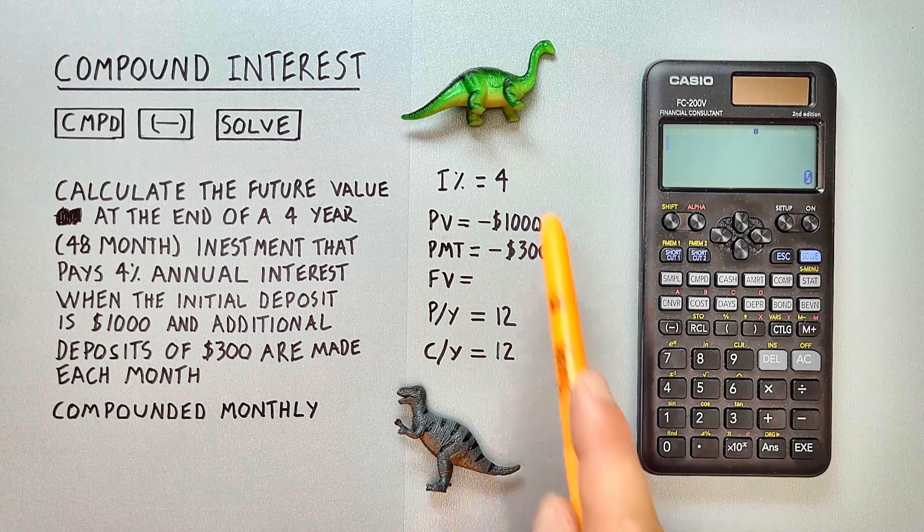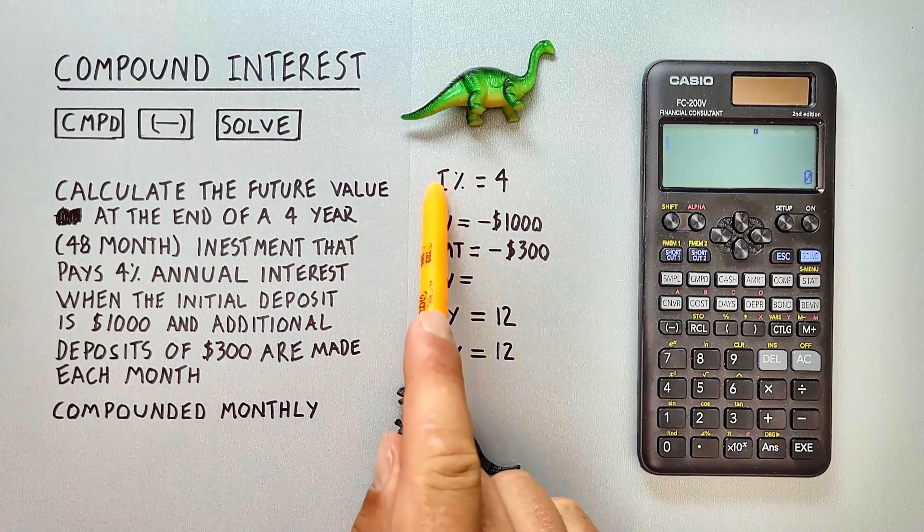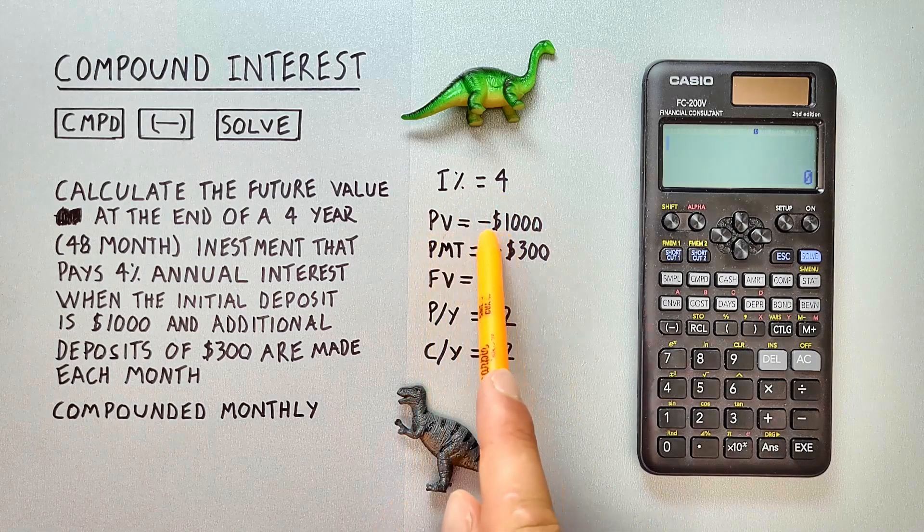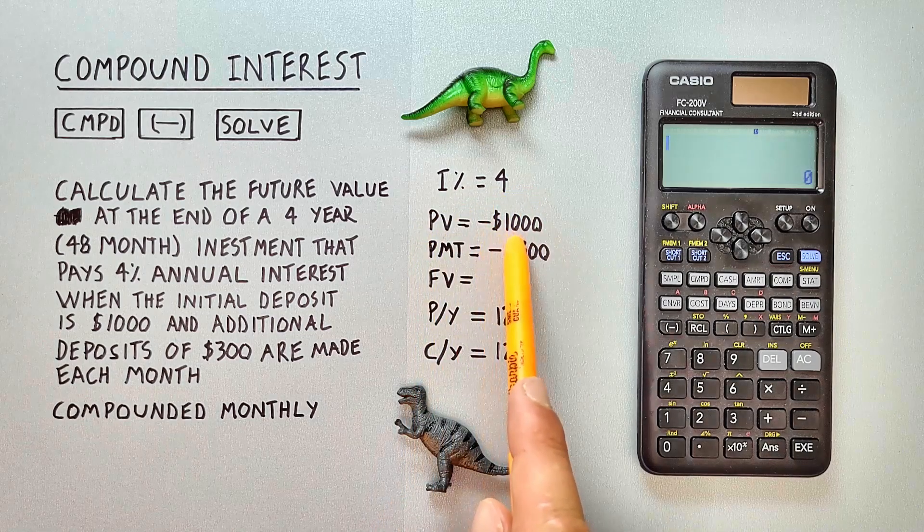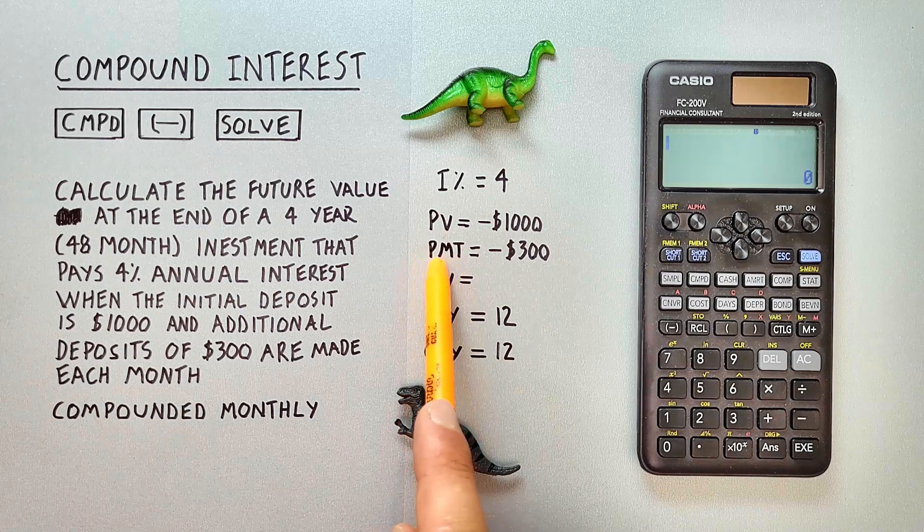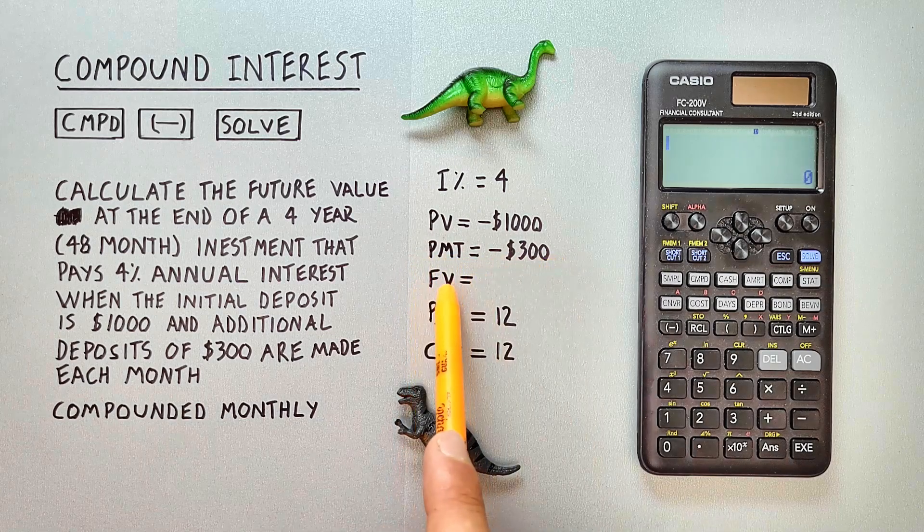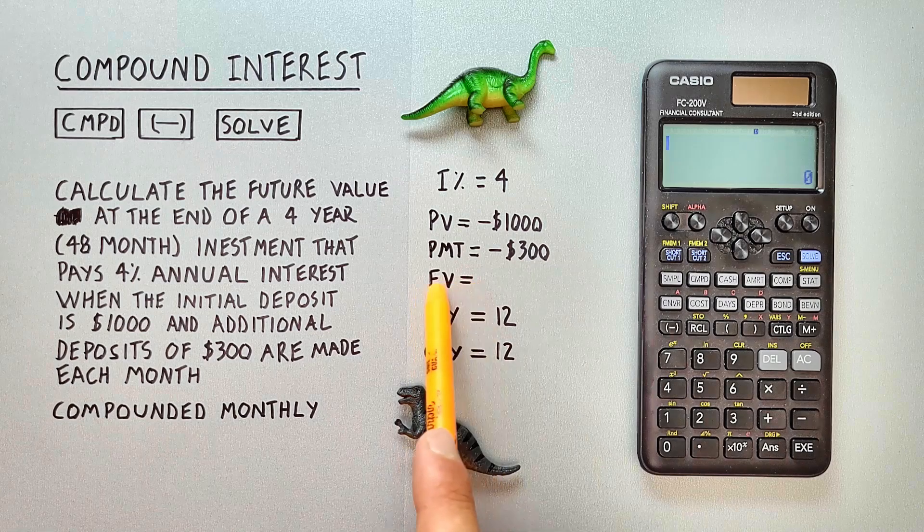So these are our variables here. I for interest is 4. Our PV or present value is $1,000. Our PMT or payment amount is $300. Our FV or future value is what we're trying to find.